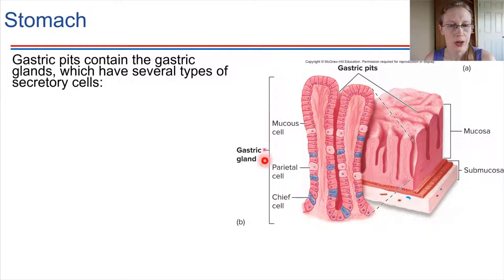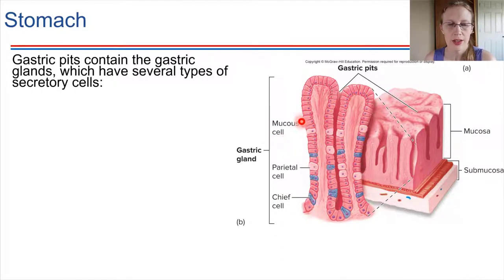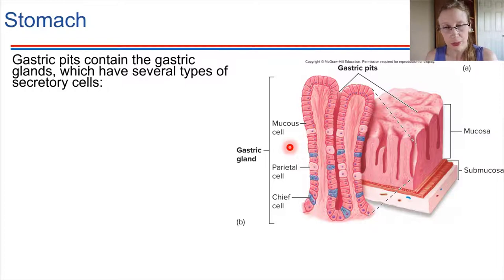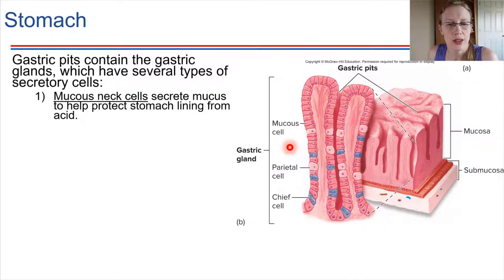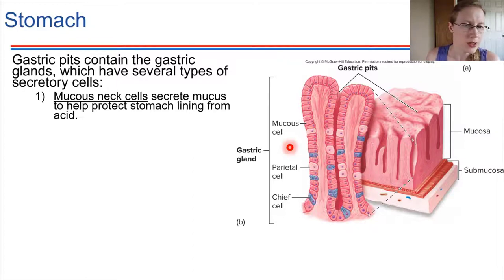The first cell type is the mucus cell, or mucus neck cell, which produces mucus. Mucus provides lubrication for food to move, but it is also extremely important in the stomach for protecting the lining. The conditions inside the stomach are very harsh with all the HCl present, and the mucus produced by these cells protects the integrity of the stomach so it doesn't digest itself from the inside out.